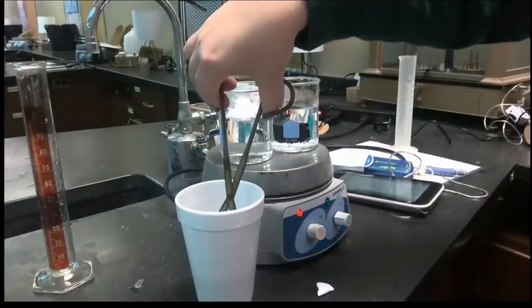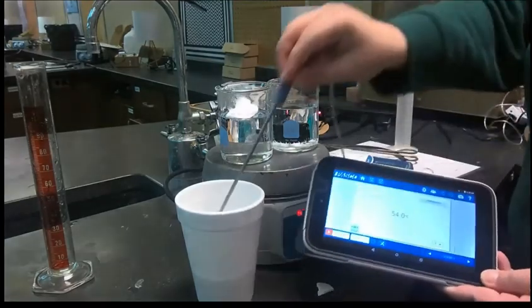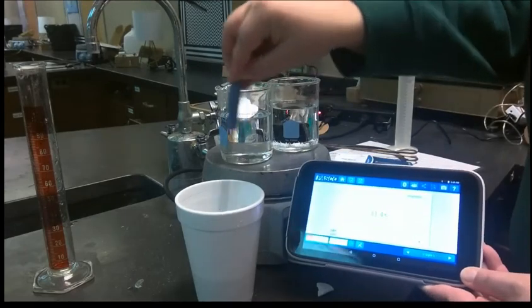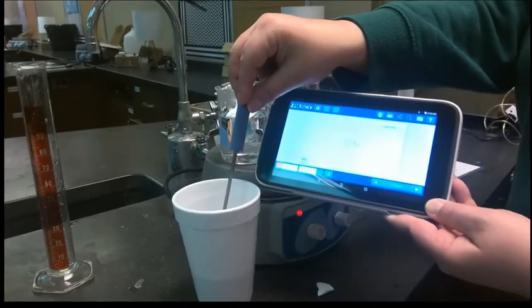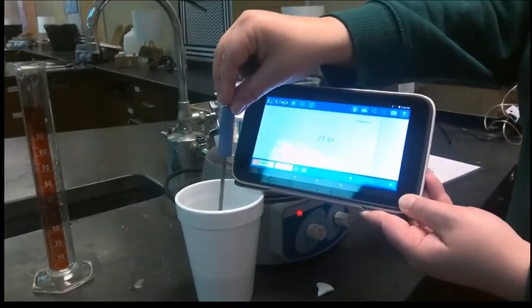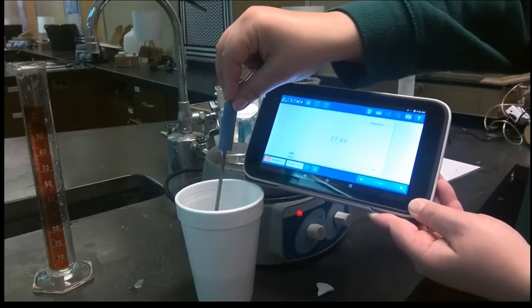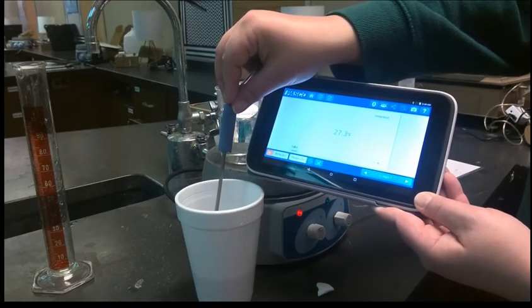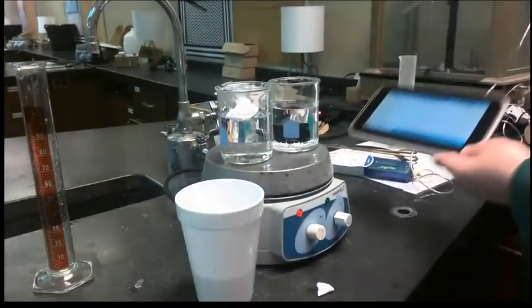I'm putting the copper into the calorimeter, and now I'm going to measure the temperature of water again. I'm kind of stirring a little bit just to make sure that the heat is dispersed evenly, distributed evenly. So I think our high temperature was 27.7 there.